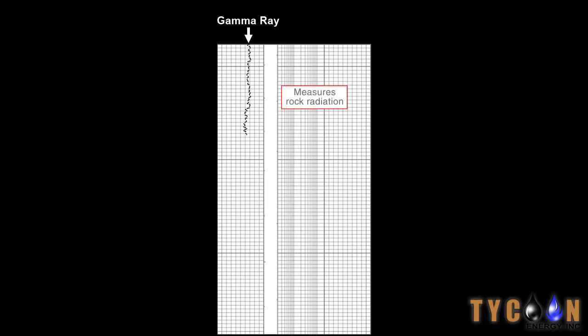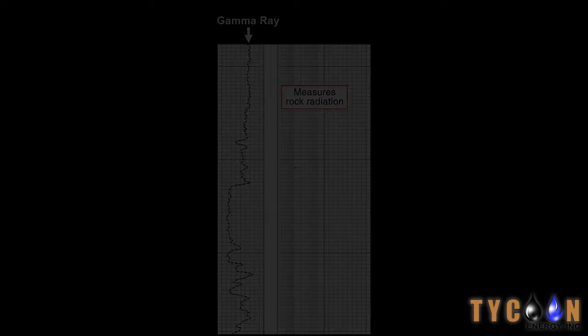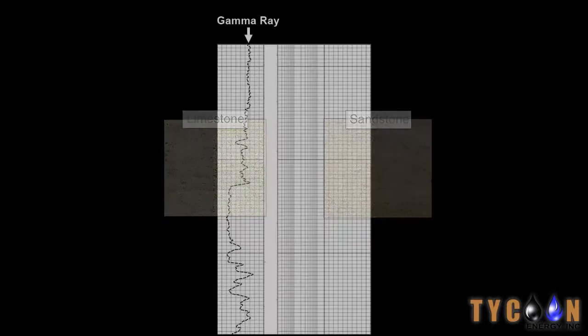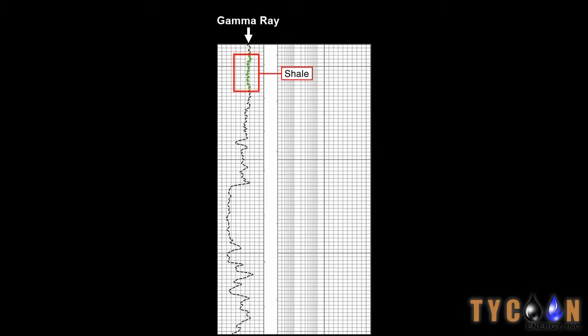On the well log, the gamma ray tool measures any radiation emitted by the rocks. Rock with lower amounts of radiation is called cleaner rock, such as limestone and sandstone. These are more likely to contain hydrocarbons than dirty rock. Notice that near the top of the log, the line is relatively flat and the reading is consistently high, indicating dirty rock, likely shale.